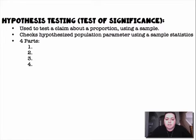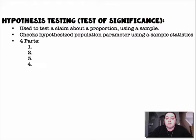Hypothesis testing, or test of significance, is used to test a claim about a proportion using a sample. These check hypothesized population parameters using a sample statistic, and we follow a four-part process.